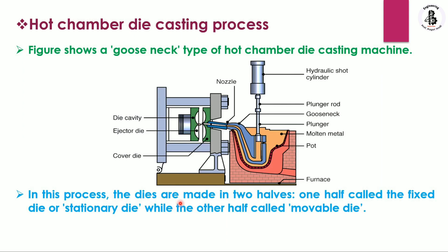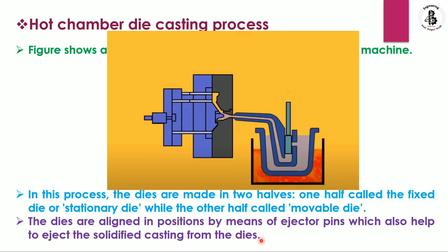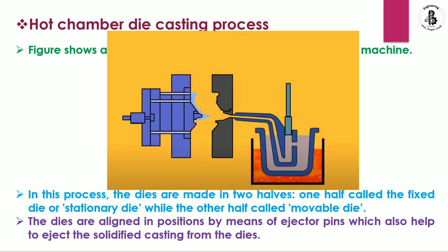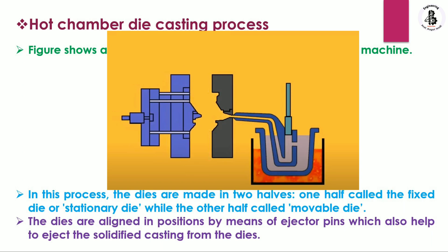In this process the dies are made in two halves — one half is called the fixed or stationary die, while the other is called the movable die. These dies are aligned in position by means of ejector pins, which also help to eject the solidified casting from the die. In the hot chamber die casting process, molten metal is inserted into the die under hot conditions, and after solidification it is removed with the help of ejector pins.